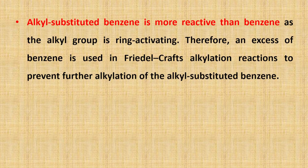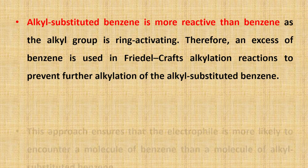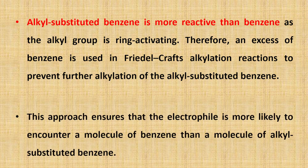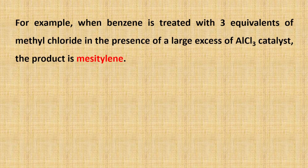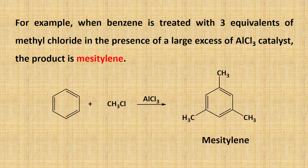Alkyl-substituted benzene is more reactive than benzene itself, as the alkyl group is a ring-activating group. Therefore, an excess of benzene should be used while preparing alkylbenzene using Friedel-Crafts alkylation. This approach ensures that the electrophile is more likely to encounter a molecule of benzene rather than a molecule of alkyl-substituted benzene. For example, if benzene is treated with three equivalents of methyl chloride, you will get a polysubstituted product such as trimethylbenzene, like mesitylene. So the amount of benzene should be more than the equivalent of alkyl halide.